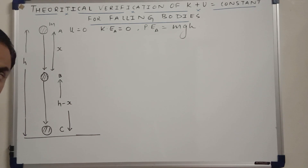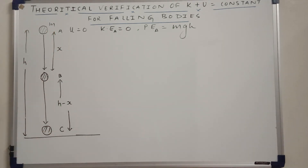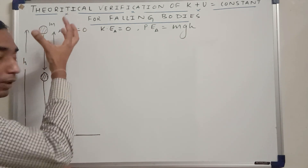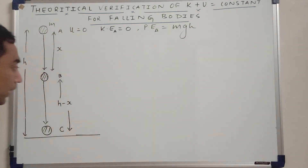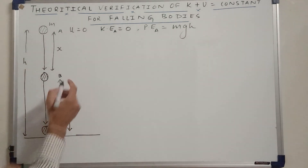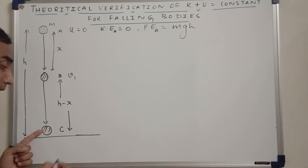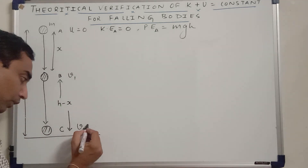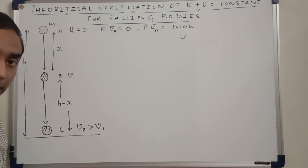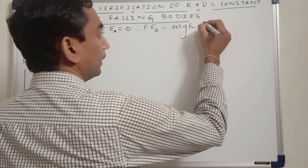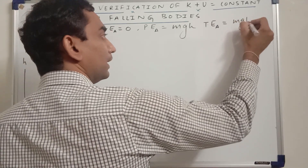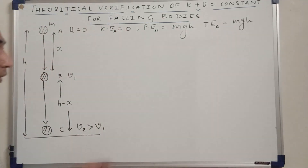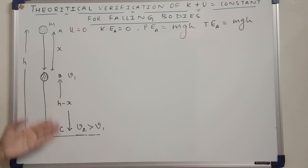We are neglecting air friction. So when this ball falls from A to C, there is no air resistance and it falls with constant acceleration in the downward direction. There is only gravitational force acting downward; all other forces are neglected. Due to that force, the ball accelerates downward, so its velocity keeps increasing. When it reaches location B its velocity is V1, and when it reaches location C its velocity is V2, with V2 greater than V1. The total energy at point A is zero plus MGH, which equals MGH — the mechanical energy — and this must remain constant at B and C. That is what we are going to prove.